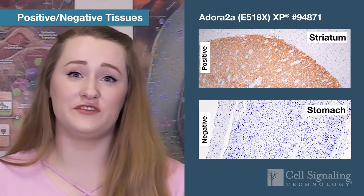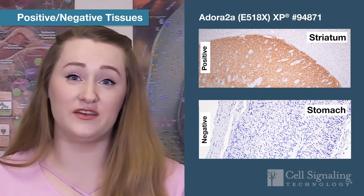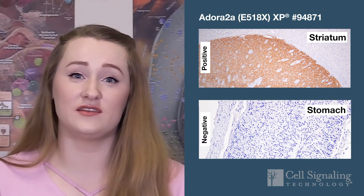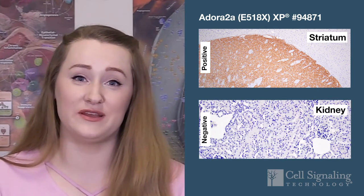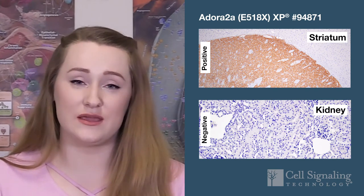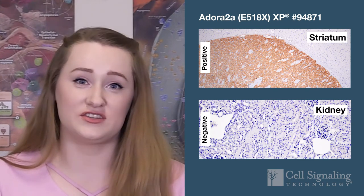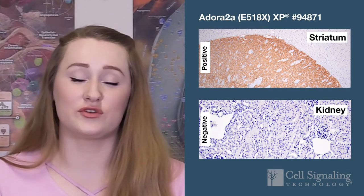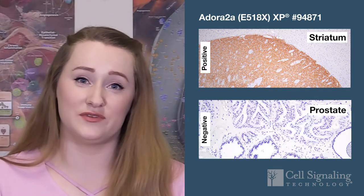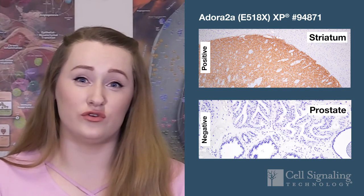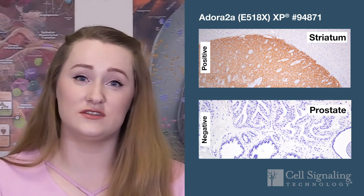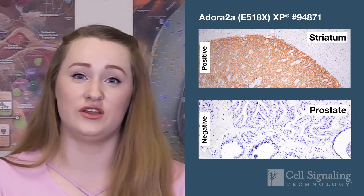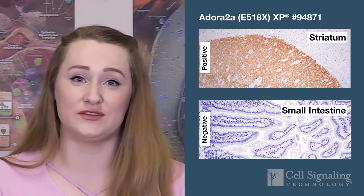If the protein of interest is known to be expressed abundantly in one tissue type and not expressed in another, you can compare staining in these positive and negative tissues to your experimental sample. You should use the same protocol and reagents, such as antigen retrieval buffers and antibody diluent, in both the control and experimental samples. If either the positive or negative control doesn't give the expected result, you should troubleshoot your protocol and antibody working concentration before proceeding with your experimental samples.